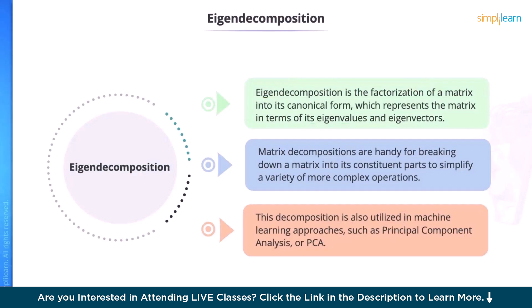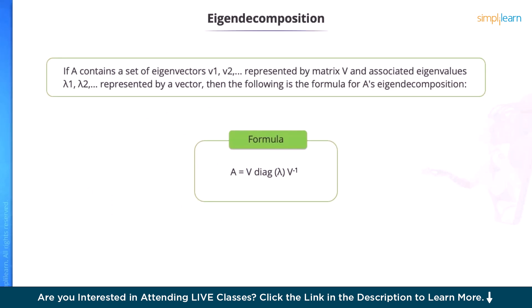Eigen decomposition is the factorization of a matrix into its canonical form, which represents a matrix in terms of eigenvalues and eigenvectors. Matrix decompositions are handy for breaking down a matrix into its constituent parts to simplify a variety of complex operations. This decomposition is also utilized in machine learning approaches such as principal component analysis (PCA). Suppose matrix A has n linearly independent eigenvectors V1, V2, V3, ..., Vn, represented by a matrix V where each column represents an individual eigenvector, and associated eigenvalues λ1, λ2, ..., λn are represented by a vector. Then the eigen decomposition of A can be expressed as A = V · diag(λ) · V⁻¹.